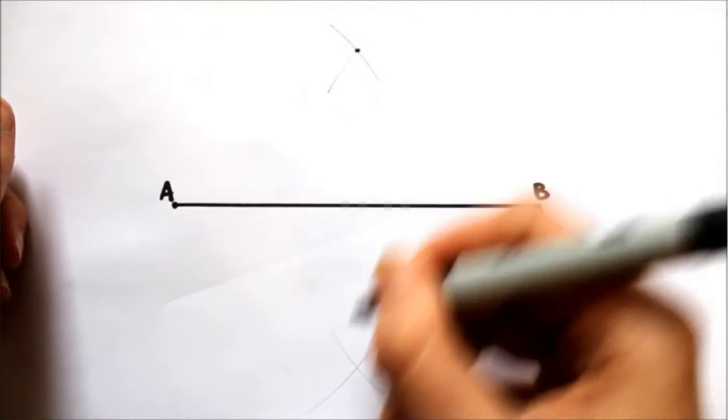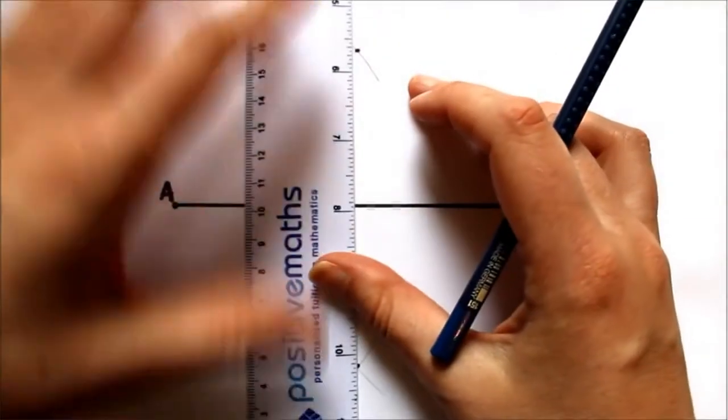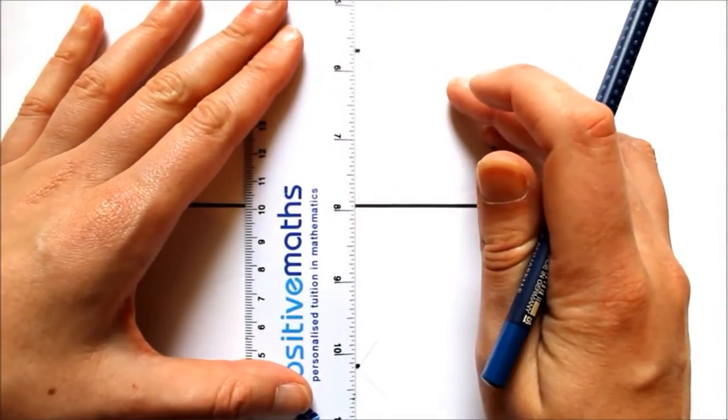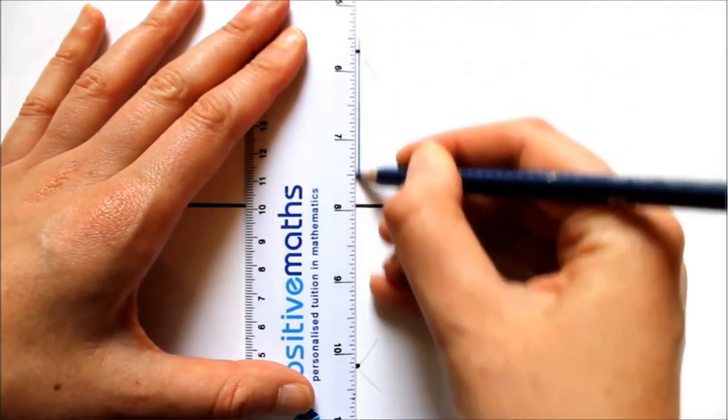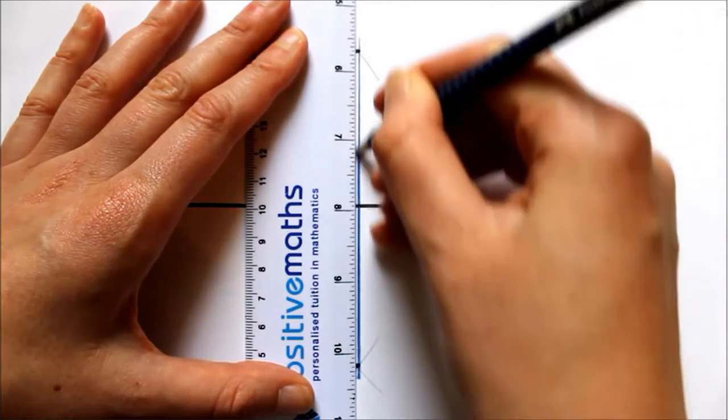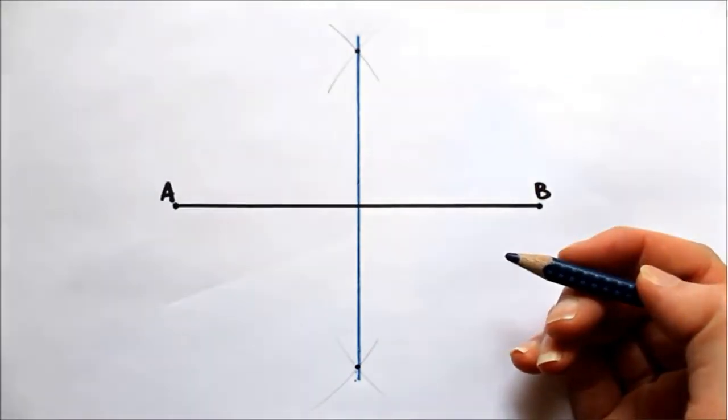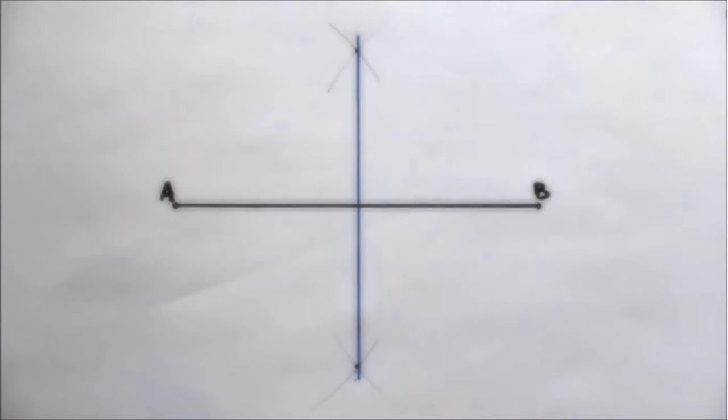So now I'm going to mark the point of intersection of the arcs. I get my ruler and I join these two together. So this line is my perpendicular bisector of the line segment AB.